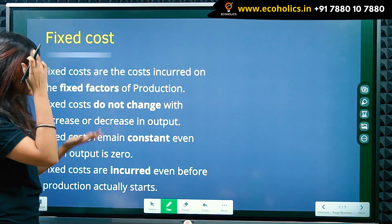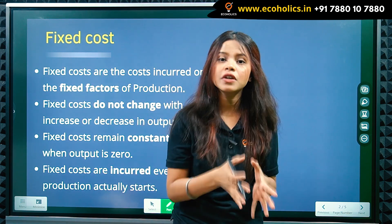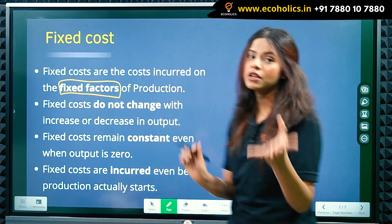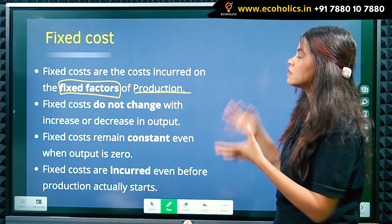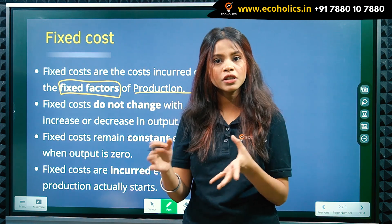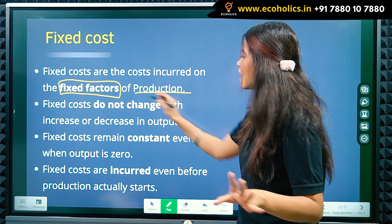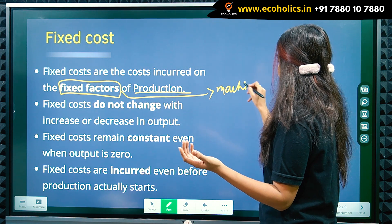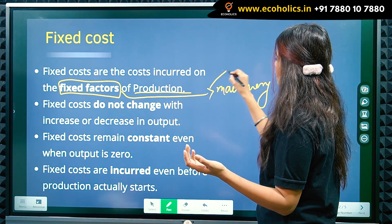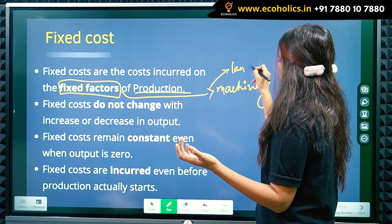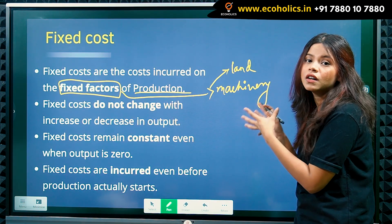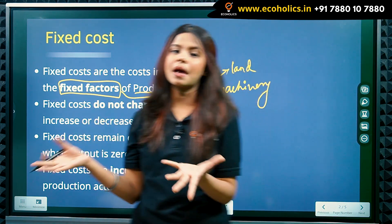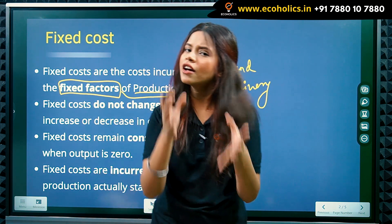Fixed costs are those costs incurred on the fixed factors of production. The keyword here is 'fixed factors of production.' Examples of fixed factors of production are machinery and land. The costs incurred on these fixed factors of production are known as your fixed costs.